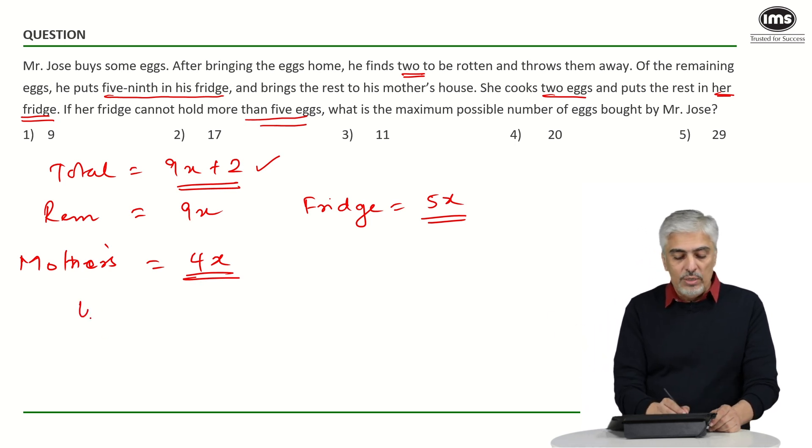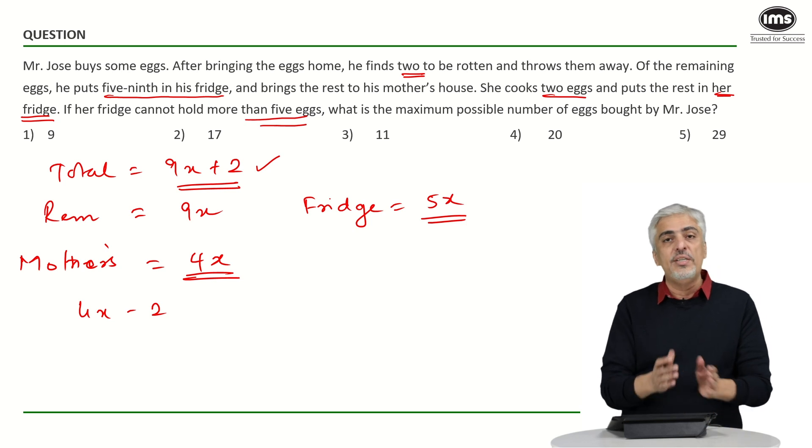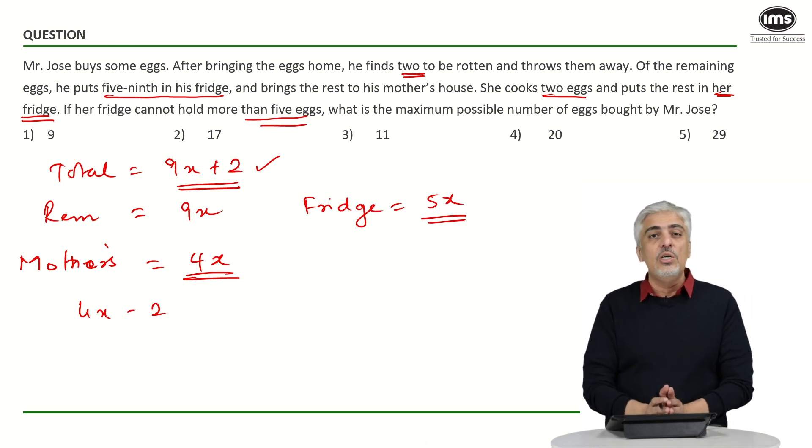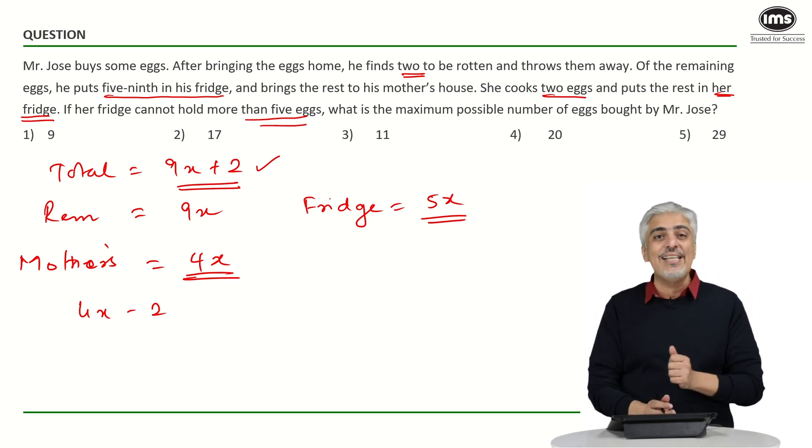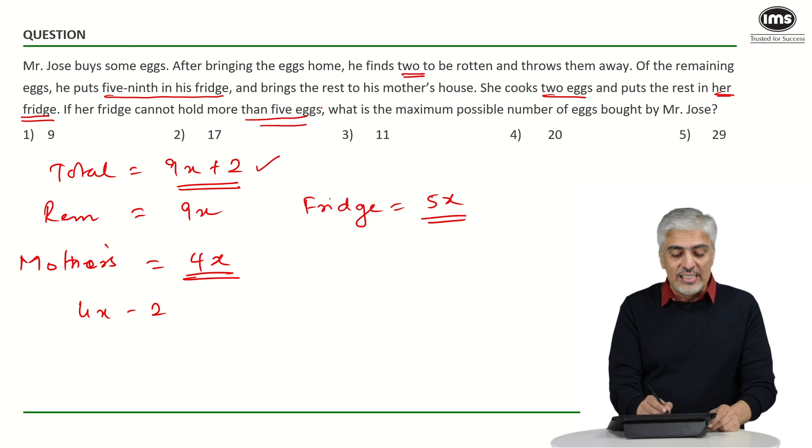2 eggs. So the remaining will be 4x minus 2 which the mother will put in the refrigerator which has to be less than or equal to 5 because the maximum eggs the mother's refrigerator can hold is 5. So this has to be less than or equal to 5. So 4x has to be less than or equal to 7 which means x has to be less than 7 by 4.